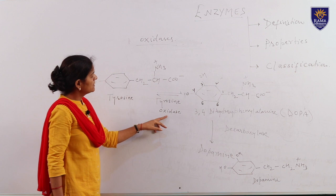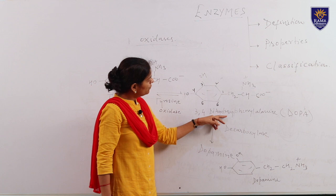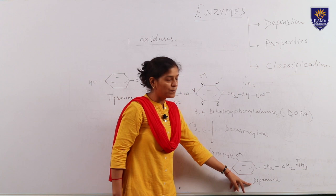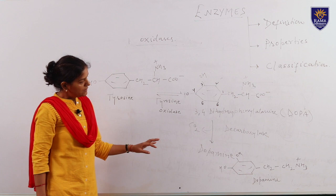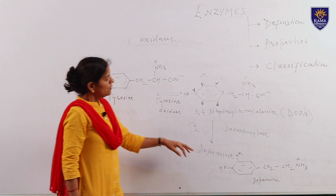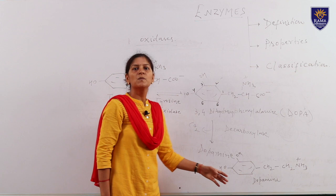Further, this DOPA — that is 3,4-dihydroxyphenylalanine — undergoes decarboxylation with the removal of carbon dioxide to give a very important product called DOPAMINE. Dopamine is a neurotransmitter. In case the tyrosine oxidase enzyme is depleted in the body, it may lead to a decrease in the quantity of this dopamine neurotransmitter, which may further lead to a disease called Parkinson's disease.